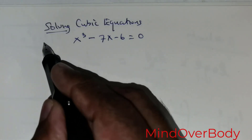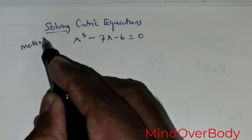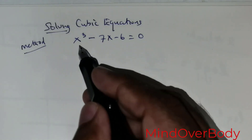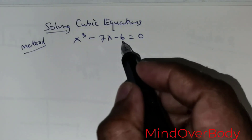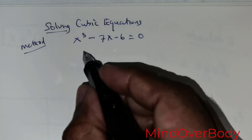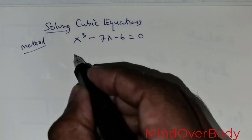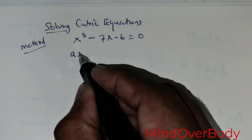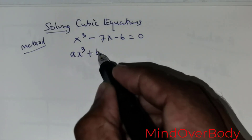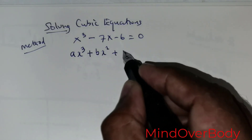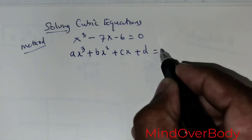Now this is the first method. In this method we are given the question: x cubed minus 7x minus 6 is equal to 0. The degree is 3. First, we have to rewrite this in the form ax cubed plus bx squared plus cx plus d equals 0.